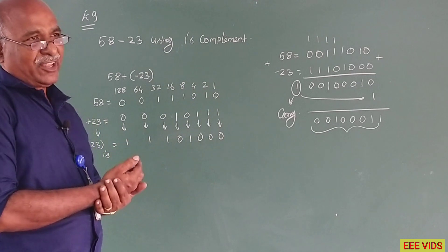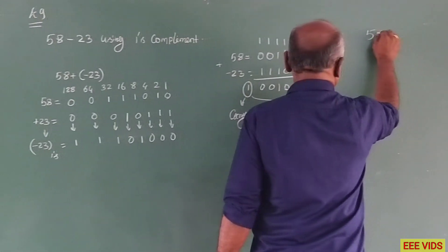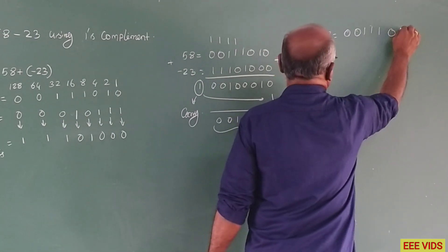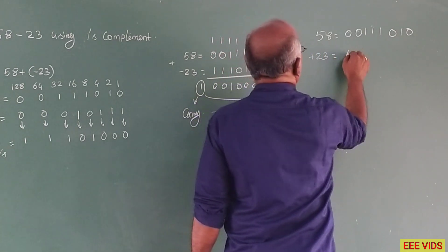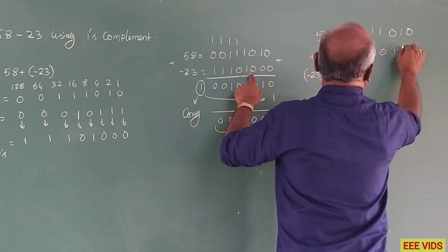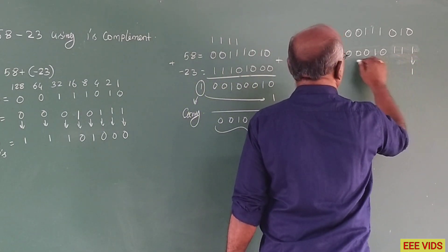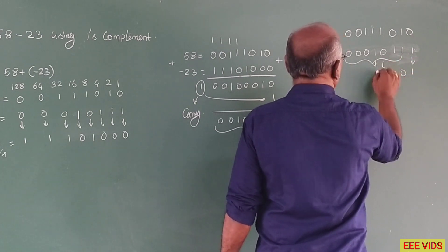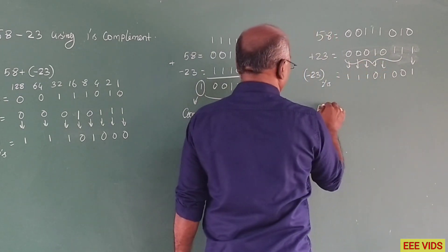So this is the method. Now for two's complement, what do we do? 58 in binary is: 0, 0, 1, 1, 1, 0, 1, 0. And for minus 23, we first write 23 in binary: 0, 0, 0, 1, 0, 1, 1, 1. Then we take the one's complement of 23: 1, 1, 1, 0, 1, 0, 0, 0.